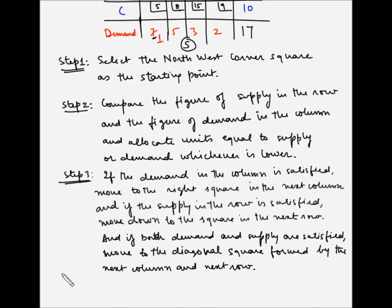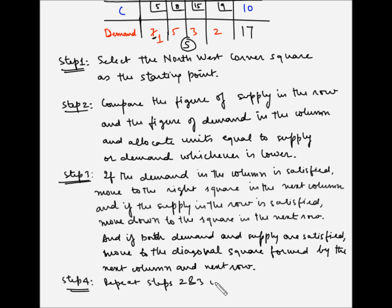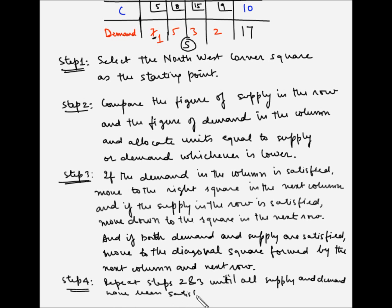Step number four says: repeat steps 2 and 3 until the supply condition of all the plants and demand condition of all the distribution centers have been satisfied.